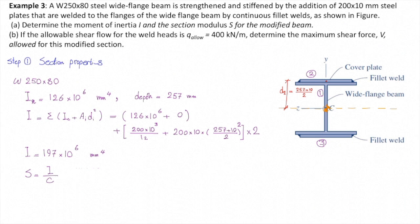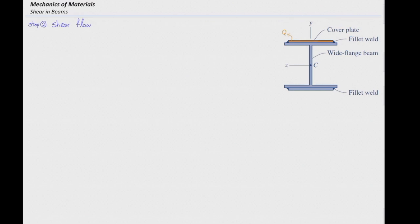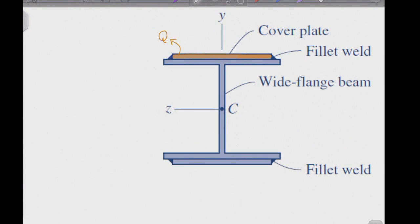We can calculate the section modulus as requested, but we don't need to use that for determining the shear flow in the beams. To determine the shear flow, we need to see what part of this section is attached to the rest of the section, and here would be that top plate.